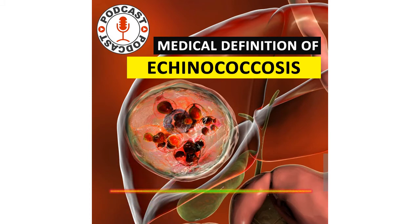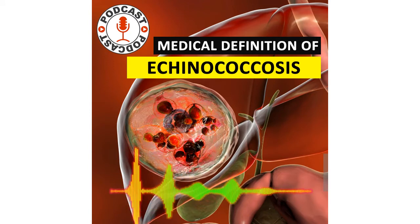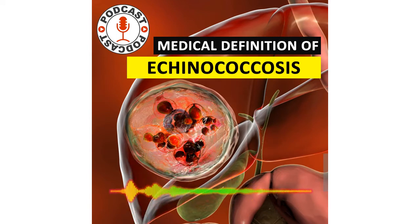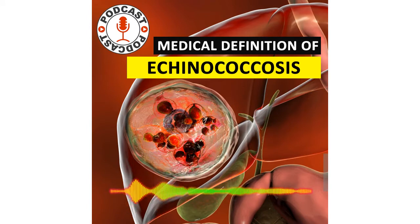CT, MRI, and ultrasound findings of the abdomen can be pathognomonic for cystic echinococcus in the liver if daughter cysts and hydatid sand — protoscoleces and debris — are present. However, simple hydatid cysts may be difficult to differentiate from benign cysts, abscesses, or benign or malignant tumours. The presence of hydatid sand, where scoleces pass into the cyst fluid and form a white sediment in aspirated cyst fluid, is diagnostic.